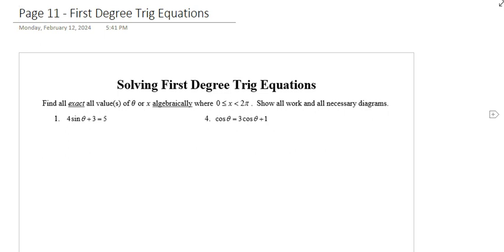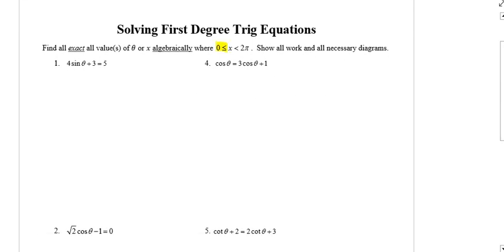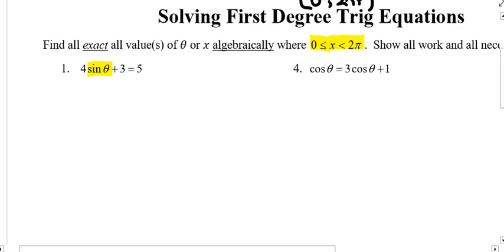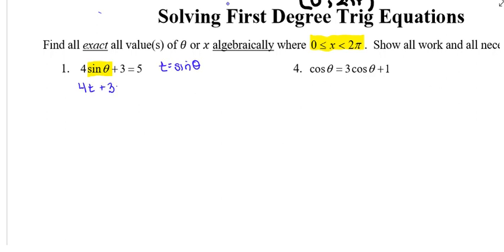I'm on page 11 and I've also got my sheet with me — 'things I need to remember.' First thing I need to pay attention to is the domain: I'm being asked to solve on the interval from 0 to 2 pi, including 0 but not including 2 pi, written with a hard bracket at 0 and parentheses at 2 pi. I'm going to teach you to do this by substitution. In our first equation, we've got 4 times the sine of theta plus 3 equals 5. I'm going to let t represent sine theta.